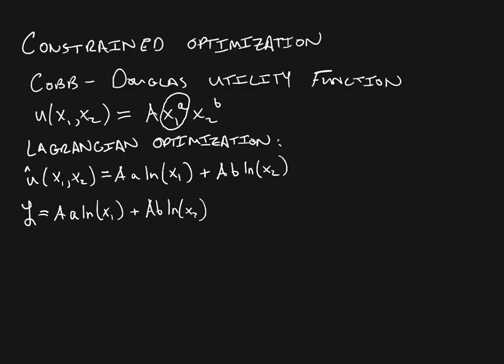We're going to set up our Lagrangian equation — we usually use a fancy L to indicate that — and we start with our objective function: A·a·ln(x₁) + A·B·ln(x₂). Then we subtract lambda, the Lagrangian multiplier, times our budget constraint. We think about it as income M minus spending on good 1 (p₁x₁) minus spending on good 2 (p₂x₂). At the optimum, the value inside the bracket should be zero because we want to spend all of our income. In this case we only have one constraint and one lambda.